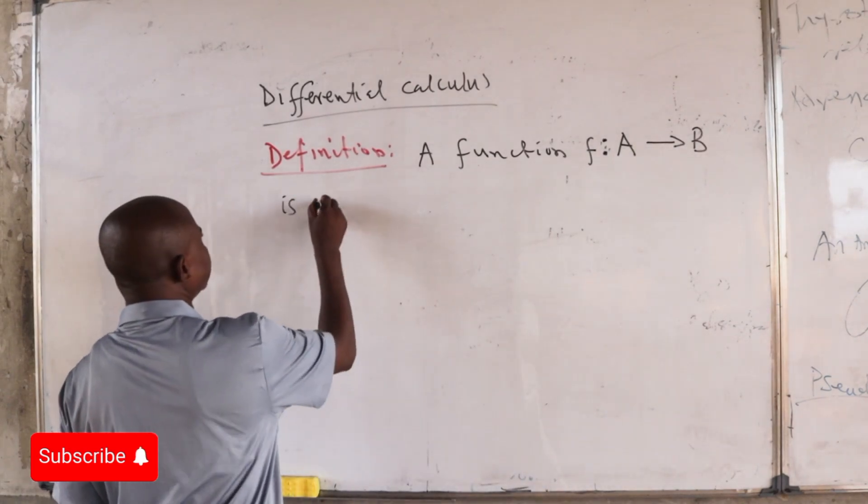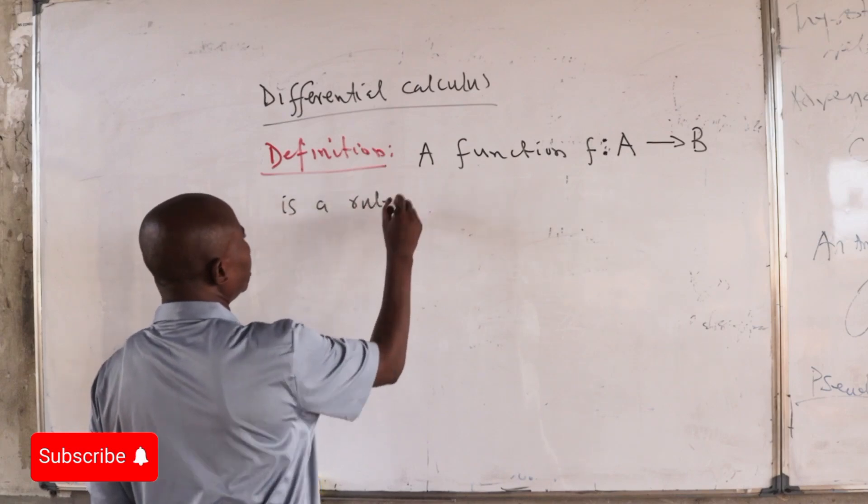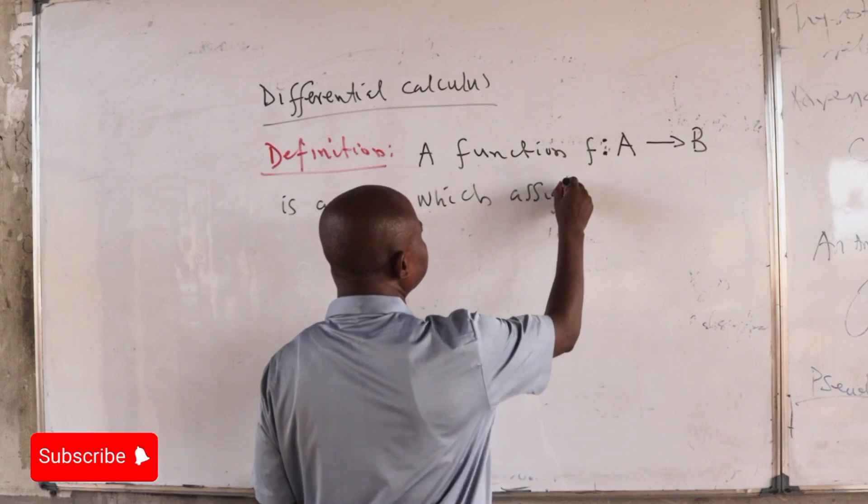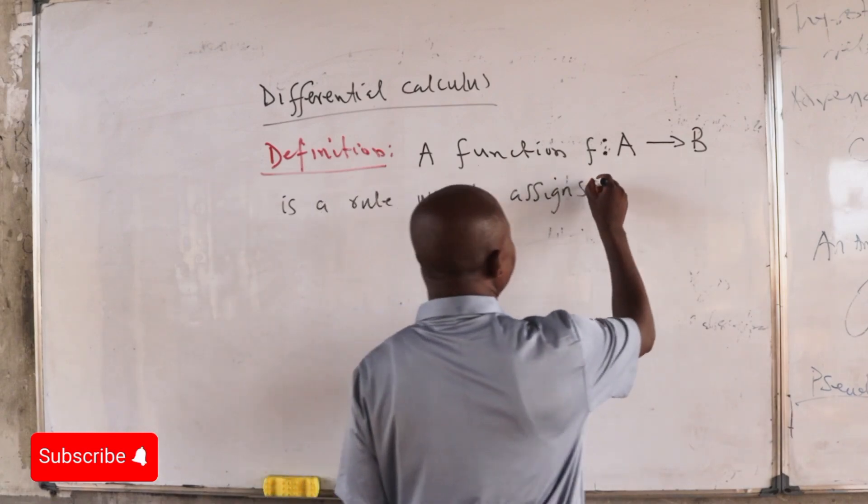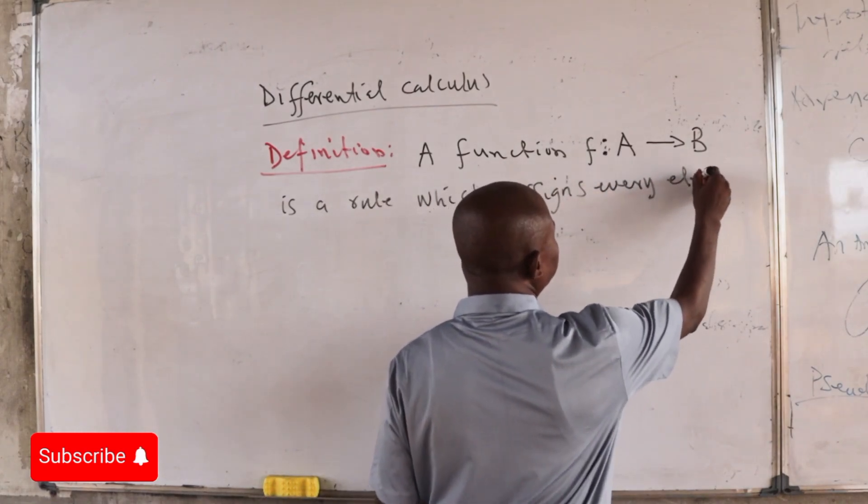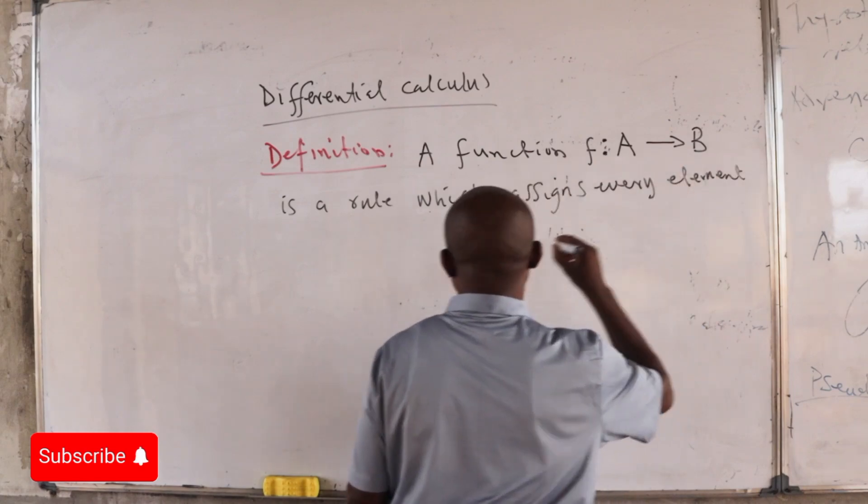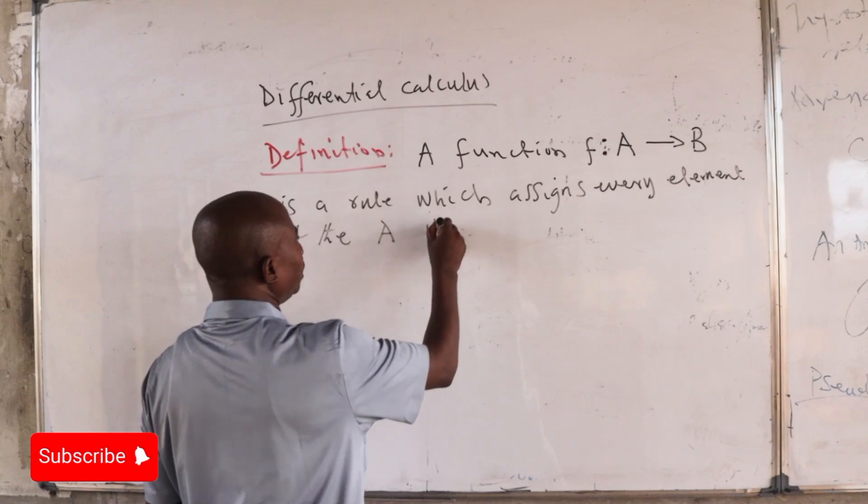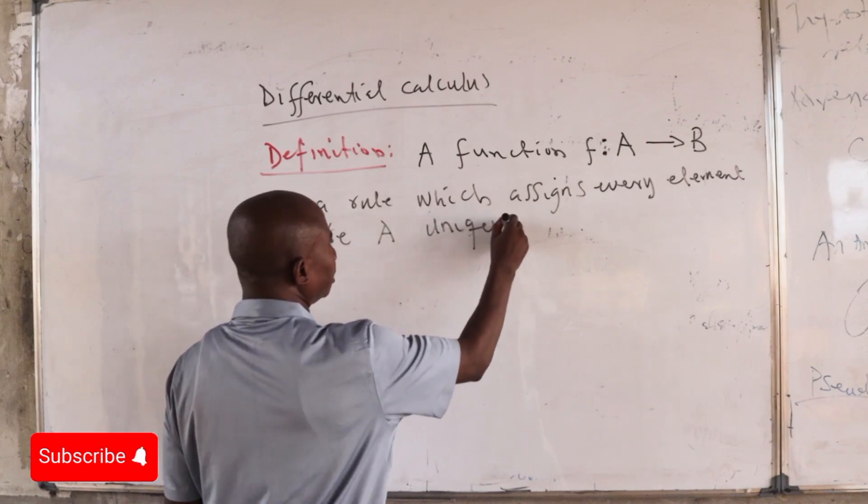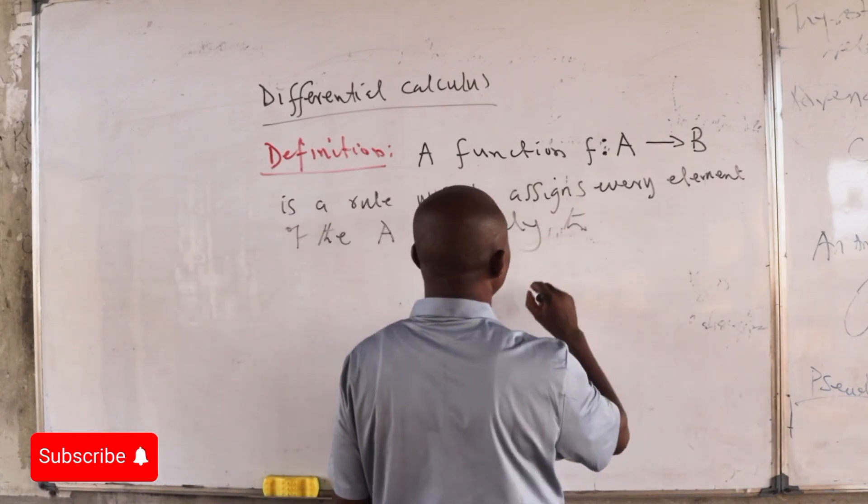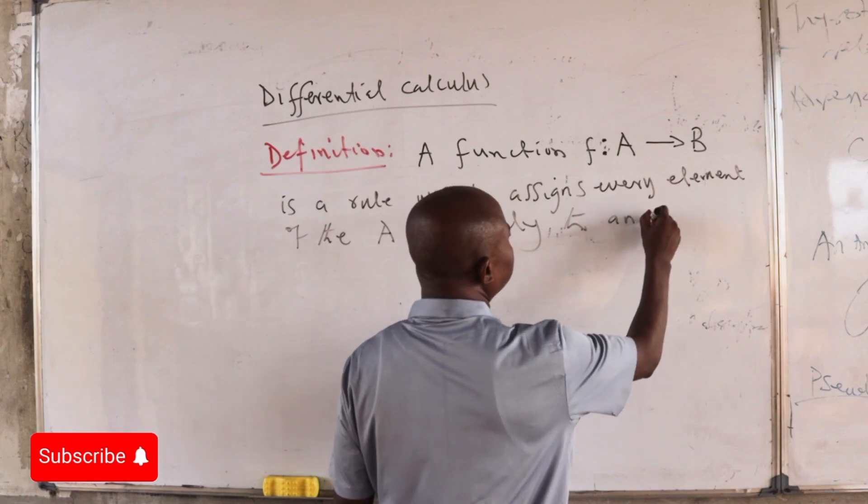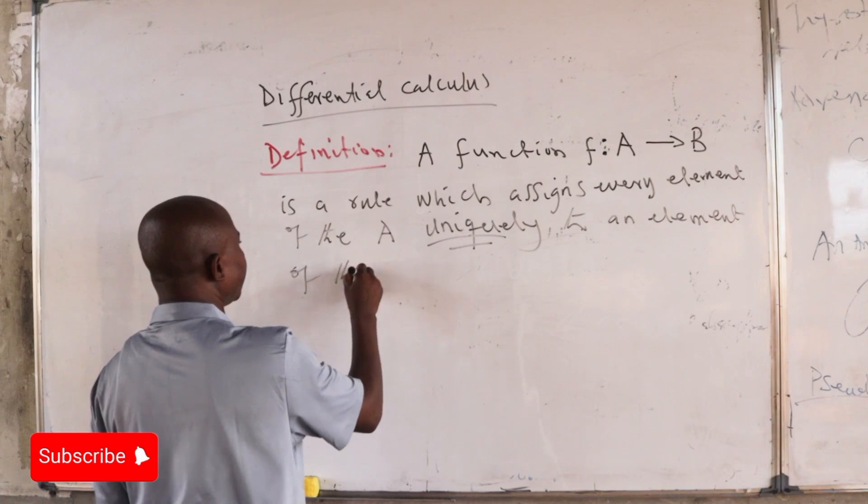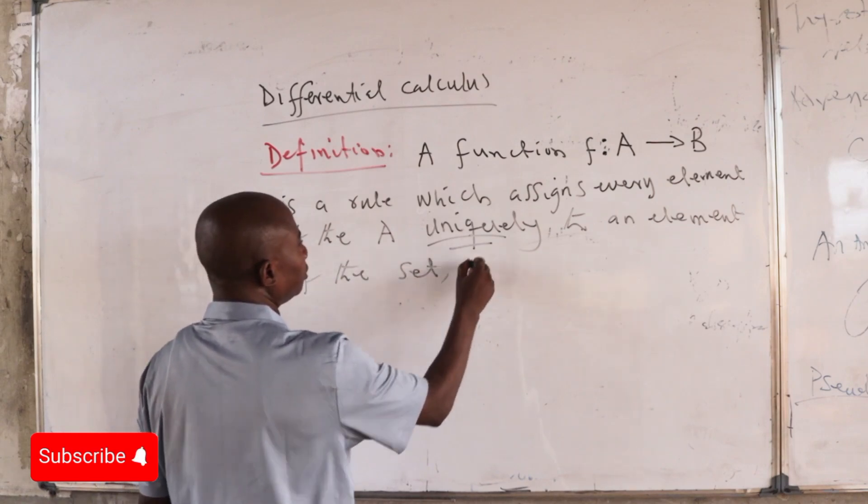is a rule which assigns every element of the set A uniquely to an element of the set B.